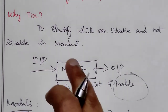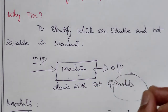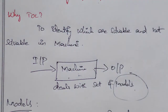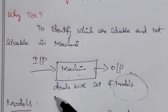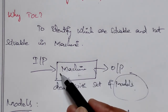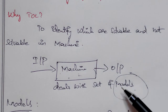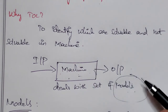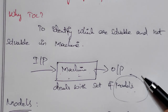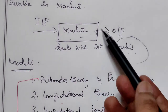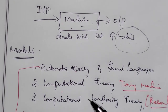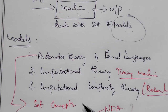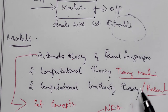Theory of computation is to identify whether a problem is solvable or unsolvable. The machine is a set of models used to determine if the problem is solvable or unsolvable. The three models are: Automata Theory and Formal Languages, Computational Theory, and Computational Complexity Theory.